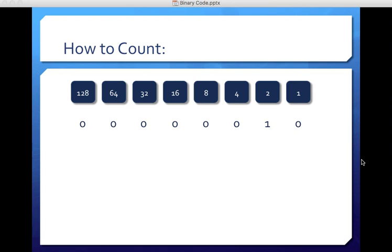All right, what about the number three? So we have zeros across. We do want a two, so we'll put a one here, and then we also want a one because two plus one equals three, so we'll put a one here. So the number three looks like this.